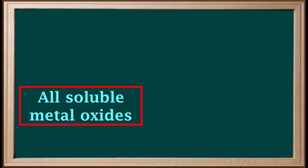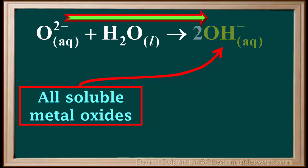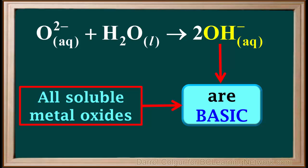Because all soluble metal oxides produce oxide ions in water, then all soluble metal oxides ultimately produce hydroxide ions in water. So all soluble metal oxides form basic solutions in water.